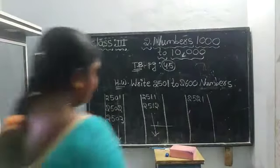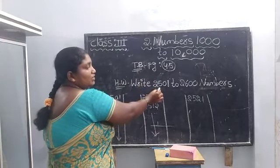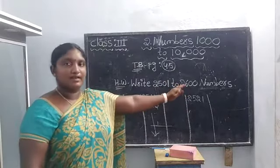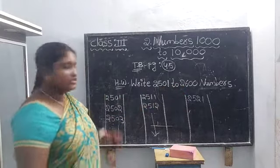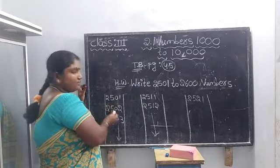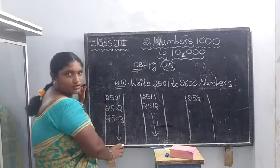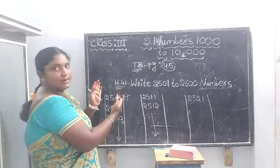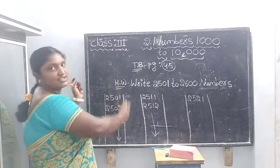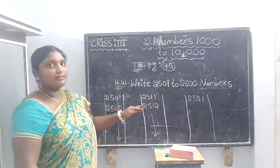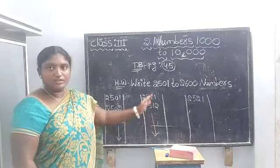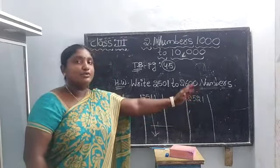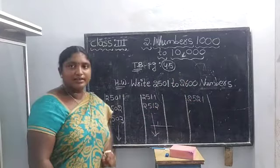Today's homework: write numbers 2,501 to 2,600. 2,501, 2,502, 2,503, 2,504 — next gap. Lines — if you have a gap, you will find a gap between the numbers. 2,511, 2,521, 2,522, 2,530 — up to 2,600. This is my homework. Children, thank you.